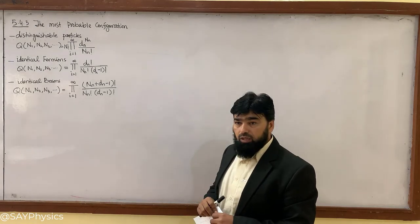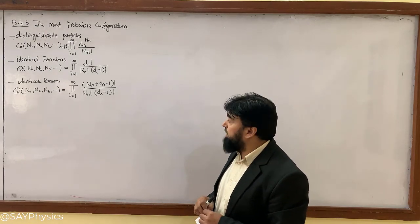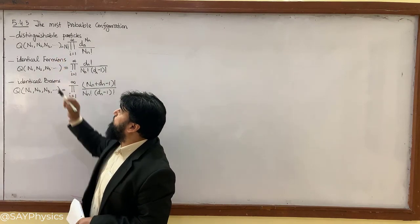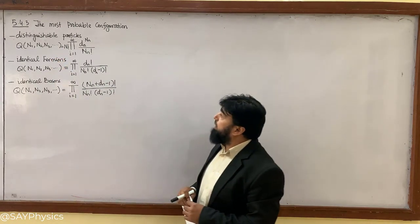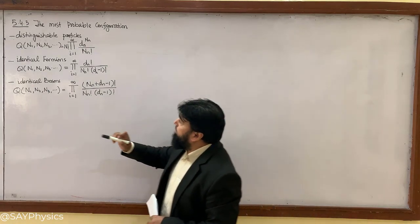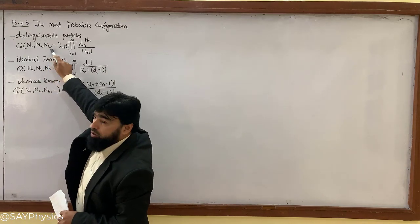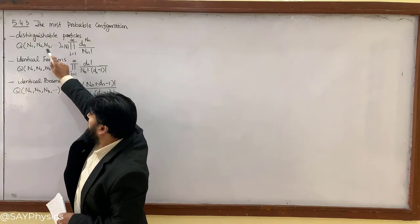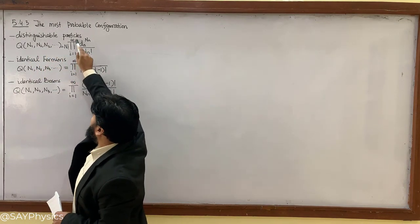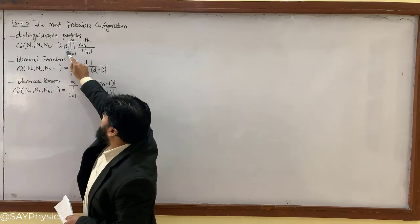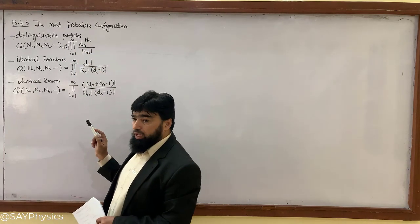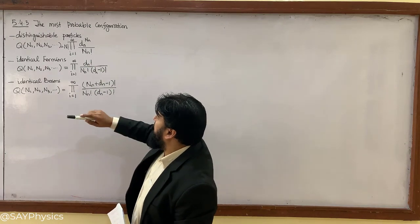We will resume the quantum mechanics classes and start from section 5.4.3, which is the most probable configuration. As you remember, we have done the configurations for distinguishable particles, which is Q for N1, N2, N3 and so on. It is equal to N factorial and the product from 1 up to infinity of d_N over N_N factorial.